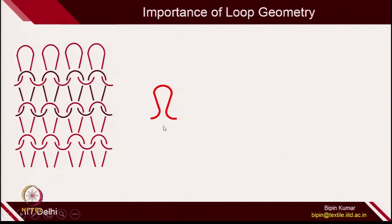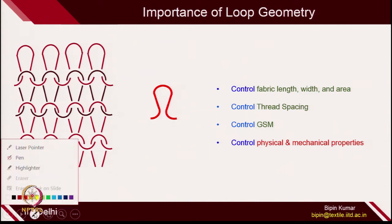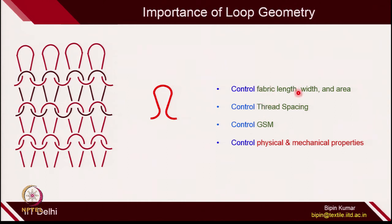For any structure of knitting, the loop is the most integral part. If you can connect the property of the fabric with the loop length, it will be very useful. We have seen how loops control so many properties — how the loop controls fabric length, width, and area. We have also seen how the loop controls GSM, since in the GSM equations, GSM is related with the loop length.